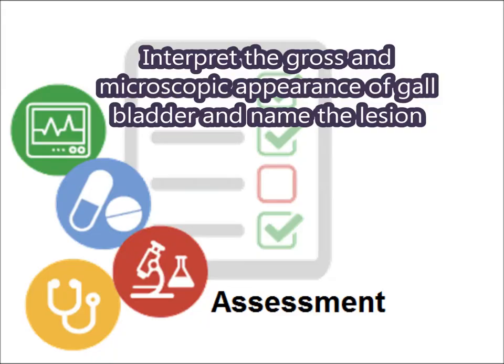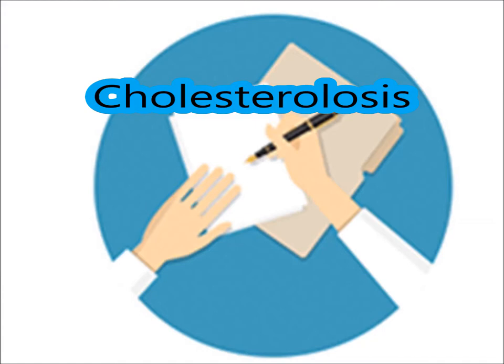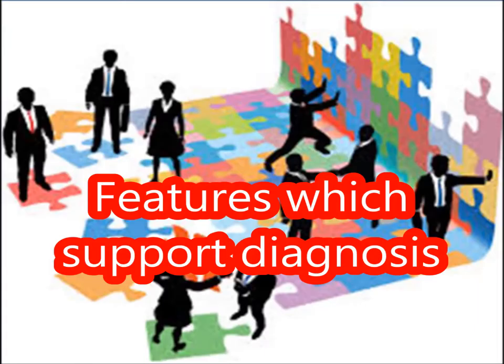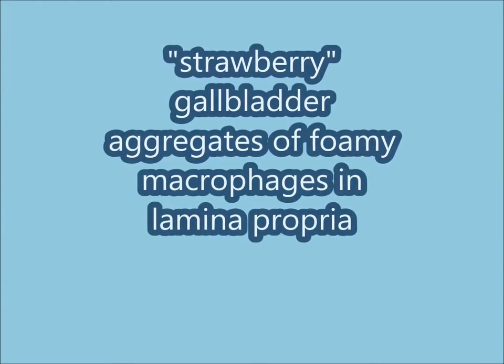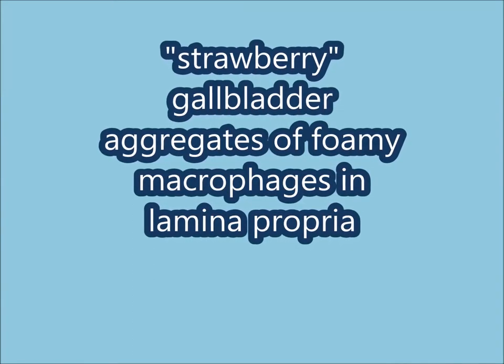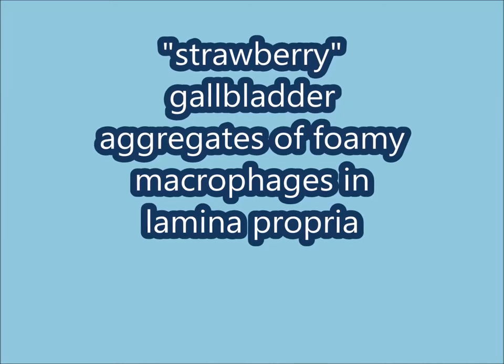To interpret the gross and microscopic appearance of the gallbladder: the name of the lesion is cholesterolosis. The features which support the diagnosis include a strawberry gallbladder appearance grossly, and aggregates of foamy macrophages in the lamina propria microscopically.